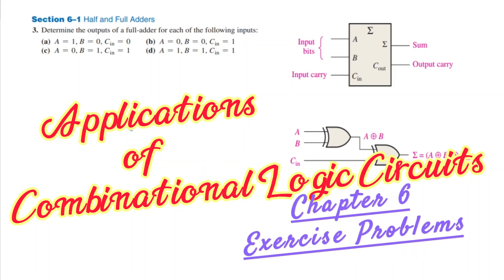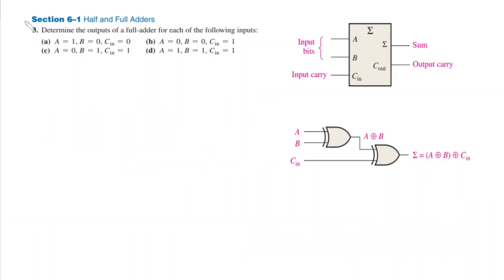Welcome back. This is section 6.1. Previously we were discussing conceptual questions related to half and full adders. Today this is question number 3 in the exercise, and we have to determine the outputs of a full adder for each of the following inputs.